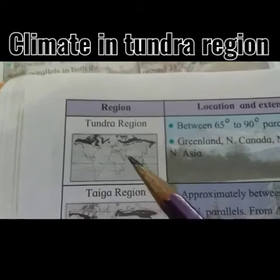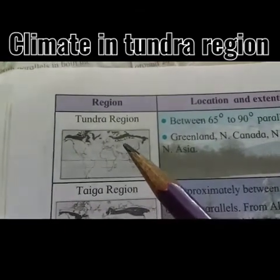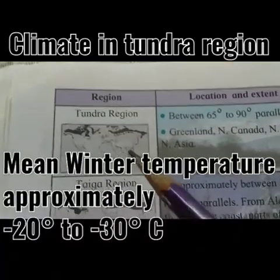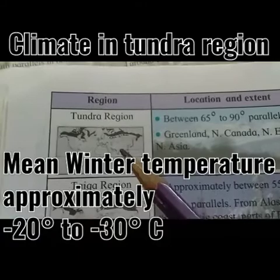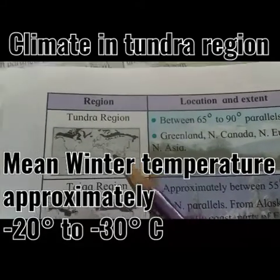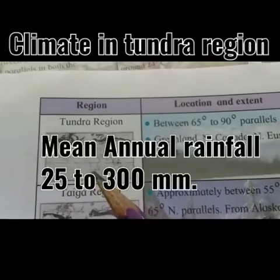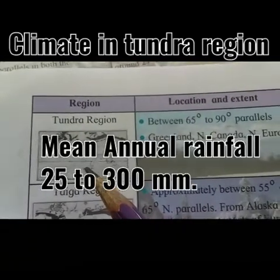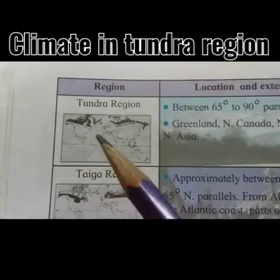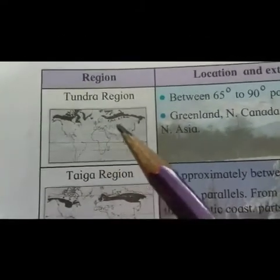Climate in the tundra region: mean summer temperature is 10 degrees Celsius, mean winter temperature is approximately minus 20 to minus 30 degrees Celsius, and mean annual rainfall is 25 to 300 millimetres. It is a very cold climate, as seen in the tundra region.